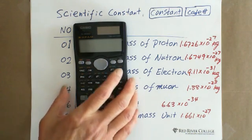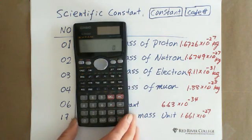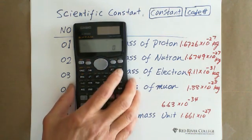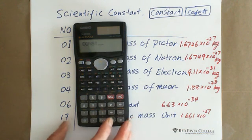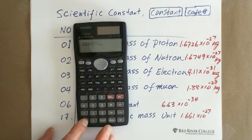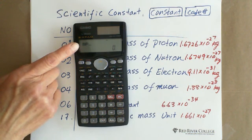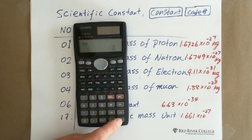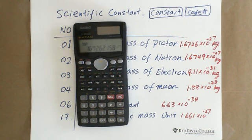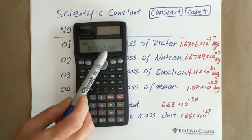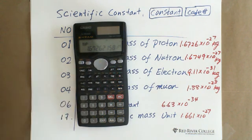Let me show you. You go to constant and put in code number 01. Return to display, it turns to MP. Hit the equal sign. It shows you 1.6726 times 10 to the negative 27.